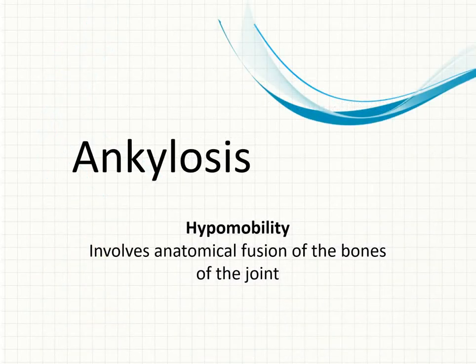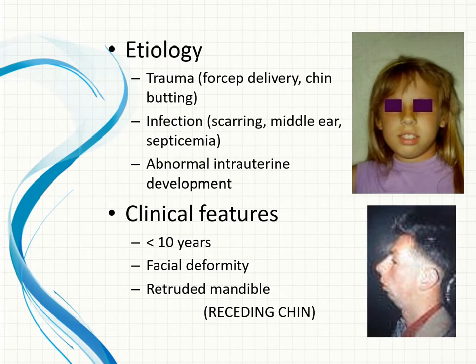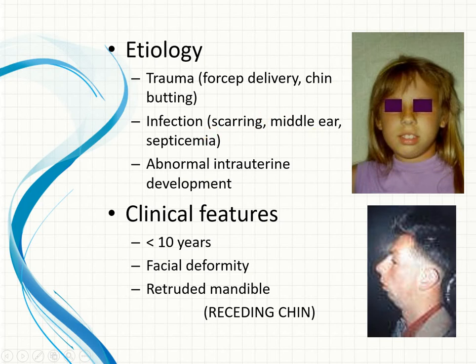Due to lack of the articular disc separating the upper and lower compartments, the mandibular condyle may fuse with the temporal bone, leading to hypomobility — this is called ankylosis. It may be due to trauma such as forcep delivery or a fall causing injury to the chin, which is translated through the ramus to the condylar region. Infection of the middle ear or septicemia may damage the articular disc, also leading to ankylosis. Abnormal intrauterine development is another cause.